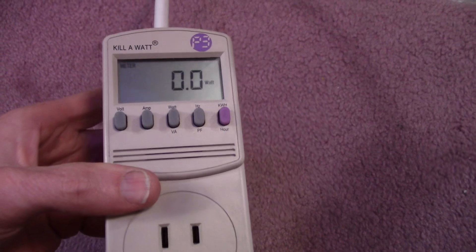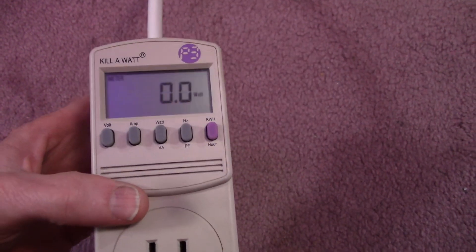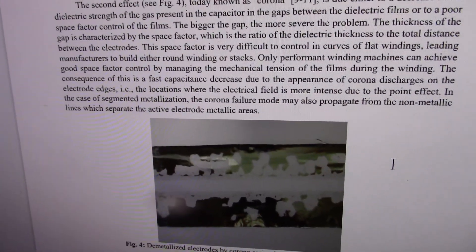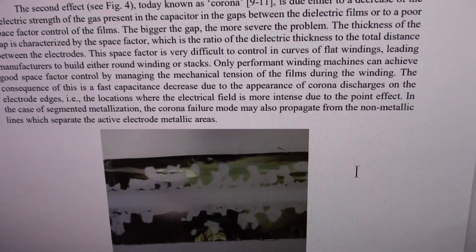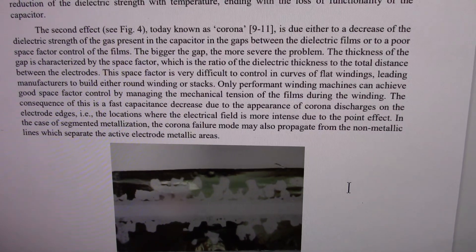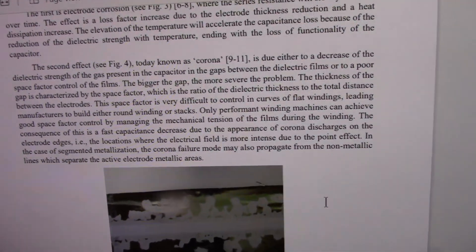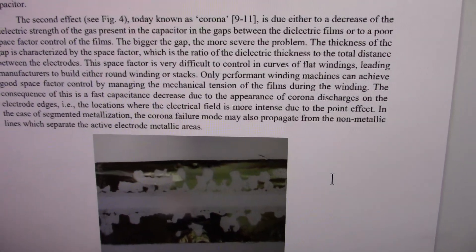So I broke open the capacitor to see what was going on. Yeah, it's pooched. A lot of the metallization is gone. Kind of looks like this in a way. I found this document on the web. I went to Google and typed in failure modes of film caps, and this is what came up.